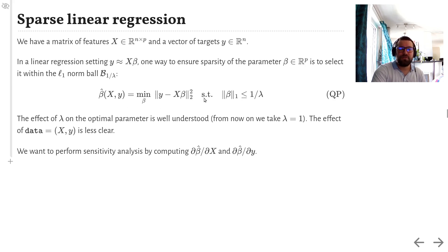One way to ensure that beta is sparse is to select it within a ball defined by the L1 norm. So instead of only minimizing the squared error, as you would do in ordinary least squares, we do something out of the ordinary. We minimize the squared error, subject to the constraint, the L1 norm of beta must be smaller than 1 over lambda. When you solve this problem, which is a quadratic program, the effect of lambda on the solution beta is pretty clear. The higher lambda, the more penalization, and the more zeros beta is going to have.